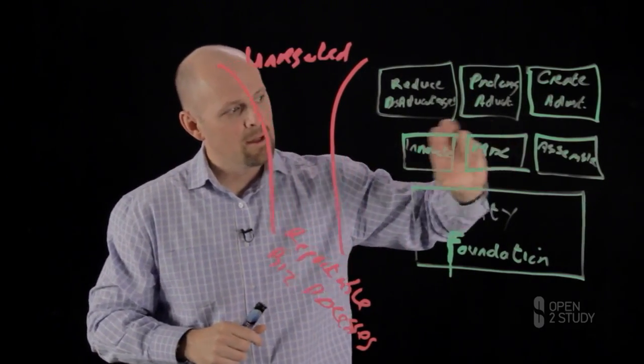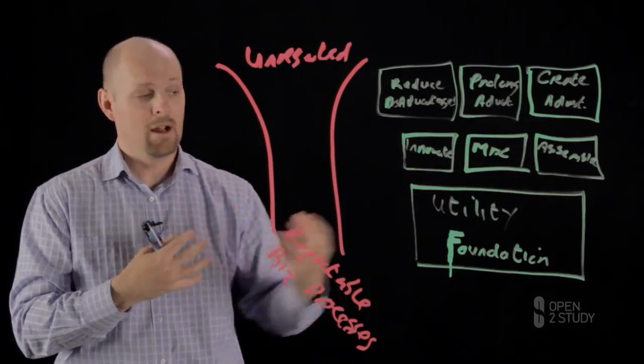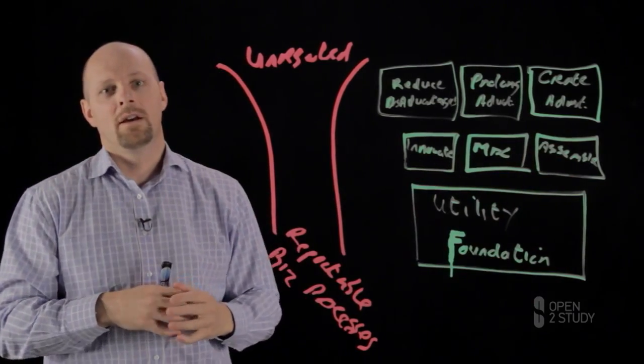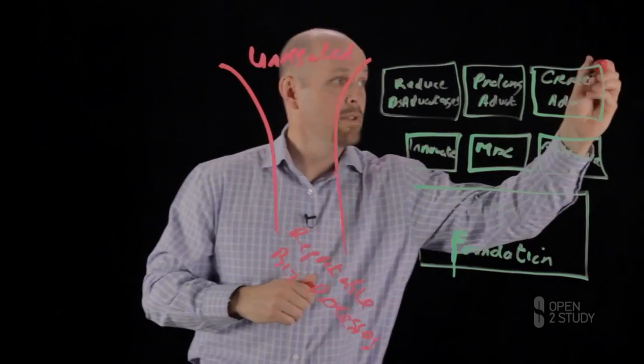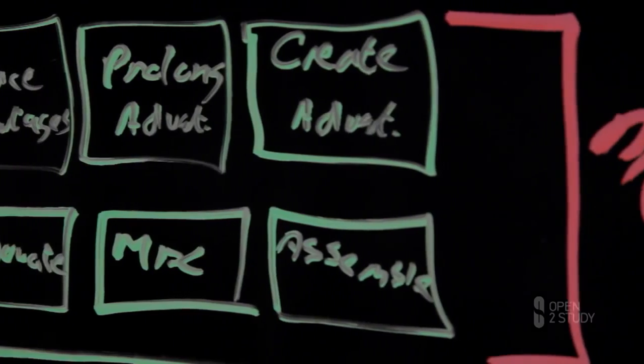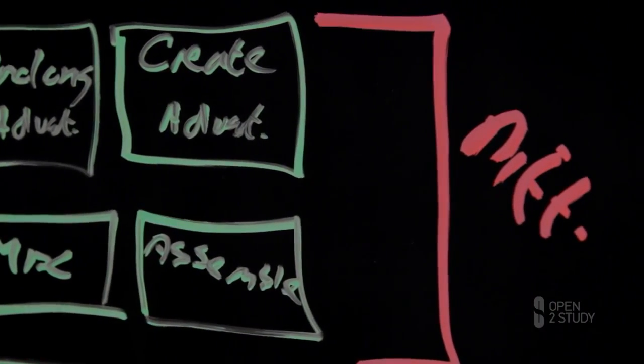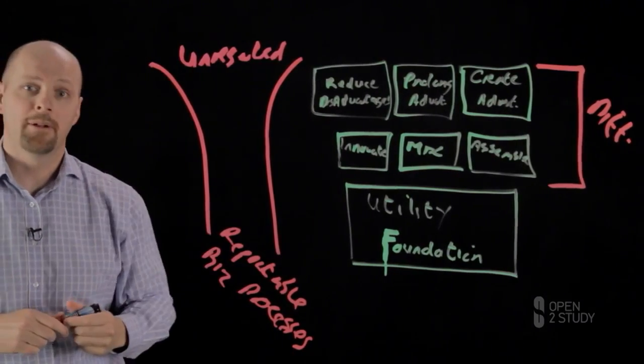We're trying to understand how we can create advantages within the industry and reduce our disadvantages. We're looking for clever ways to innovate, mix, and assemble our underlying utility layer to create more differentiation within an organization. You can see this piece here as being a differentiation part of an organization as opposed to the utility layer which sits at the bottom.